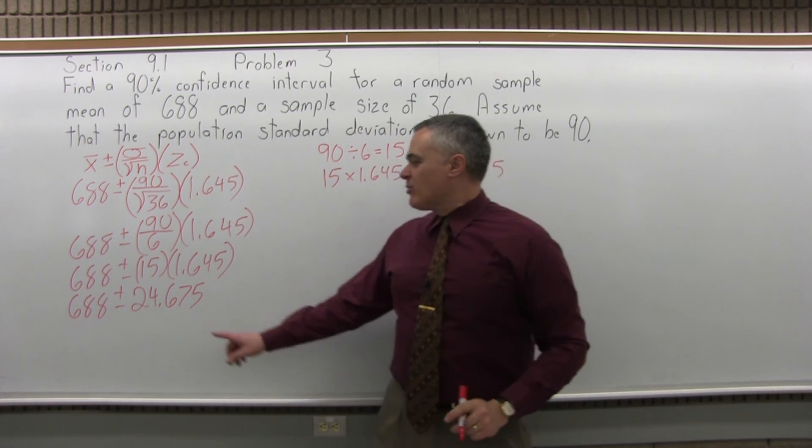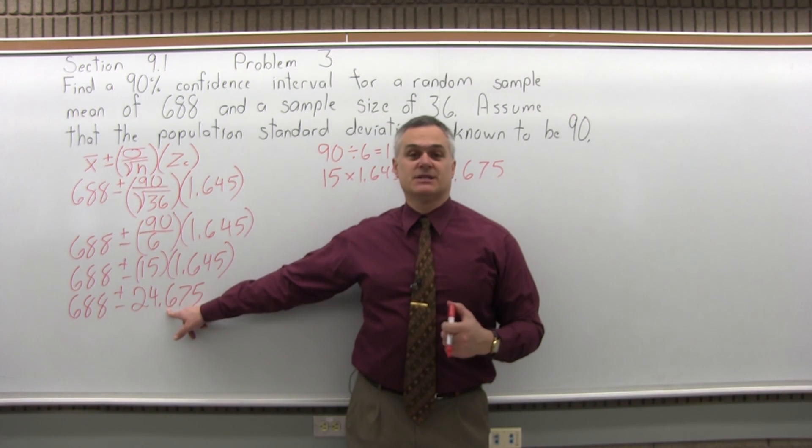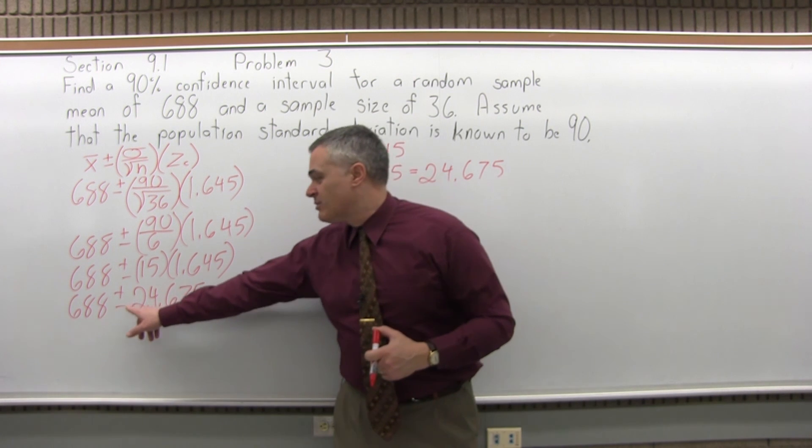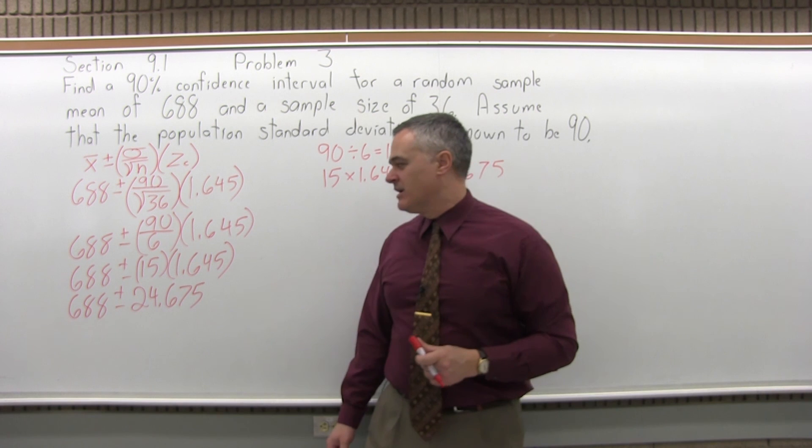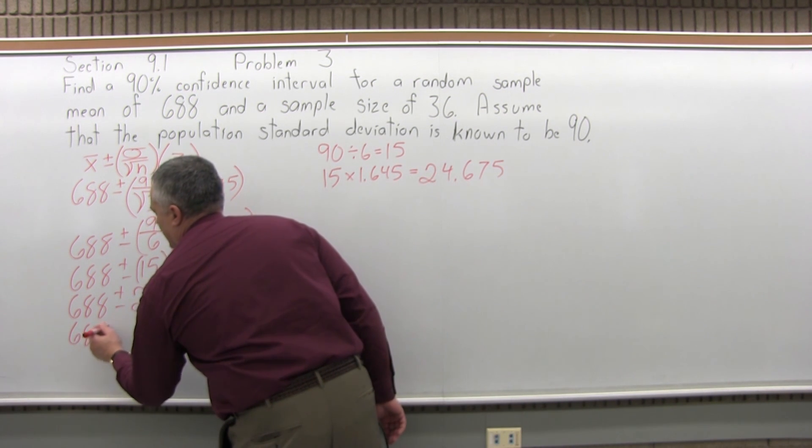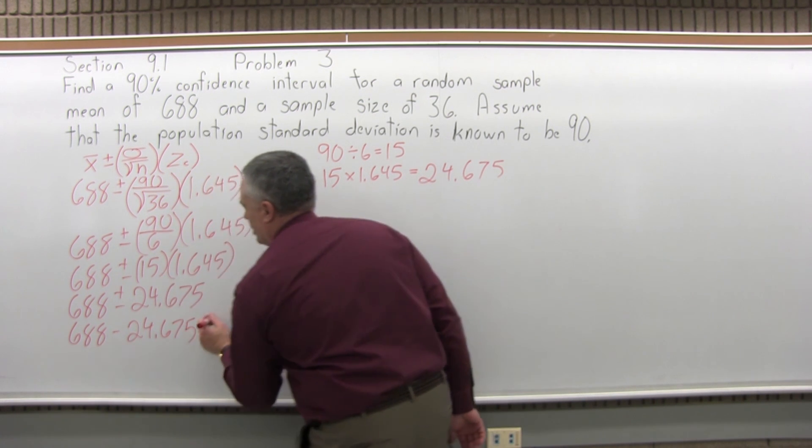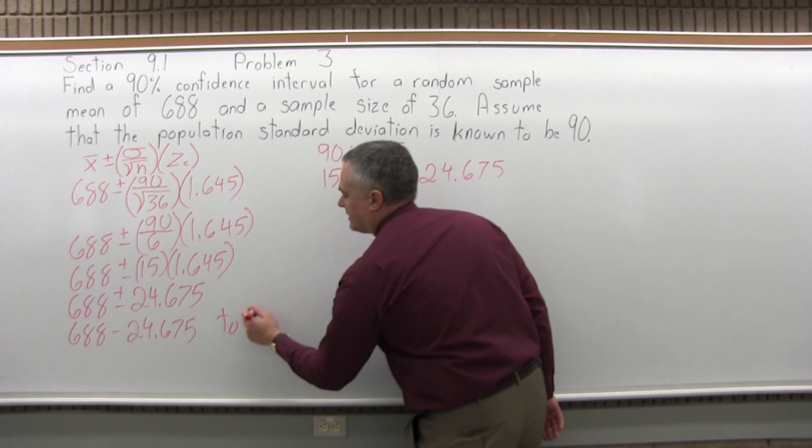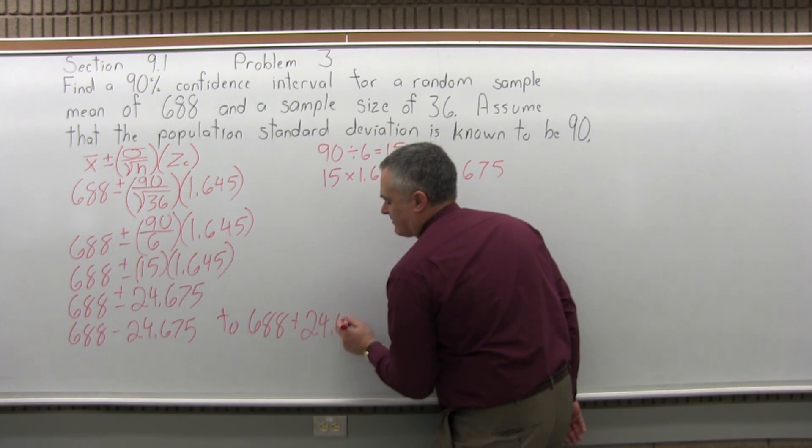So I can do that multiplication now, and I have 688 plus or minus 24.675. So now that I'm down to a single value after the plus and minus, I can now split this into a separate minus and a separate plus. I tend to like to put the low end of the interval first. It can really be expressed in either order, but what we have is 688 minus 24.675 to the upper end of your interval, 688 plus 24.675.